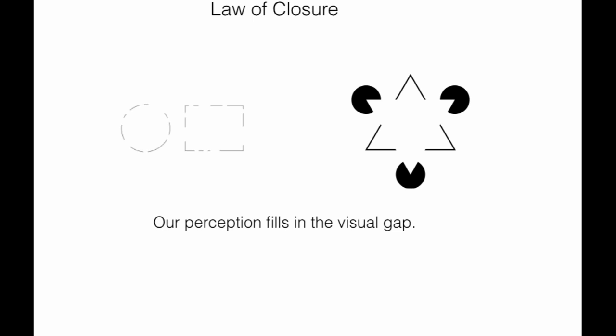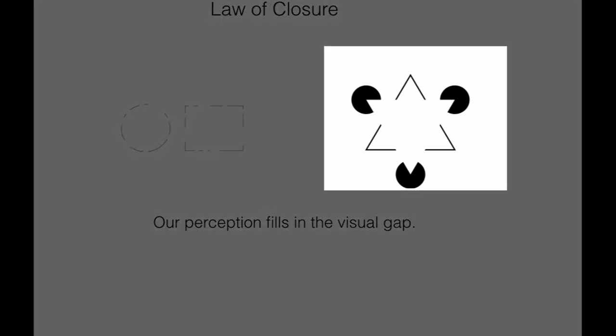Moving on to the next law, which is law of closure. To understand the law of closure, if you see the image on the right hand side, you can see that there are three circles which seem to form a white triangle. But in reality, there is no white triangle. This is something which we perceive because they are positioned in a certain way.